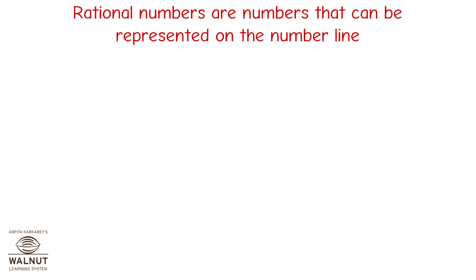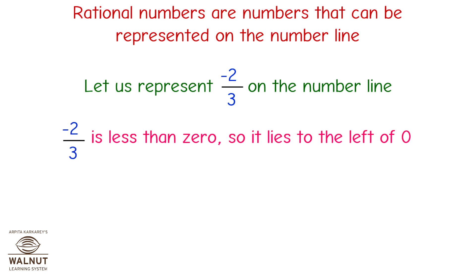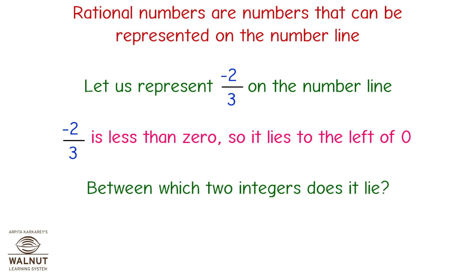Rational numbers are numbers that can be represented on the number line. Let us represent –2 upon 3 on the number line. –2 upon 3 is less than 0, so it lies to the left of 0. Between which two integers does it lie? It lies between 0 and –1.